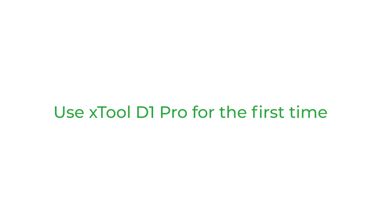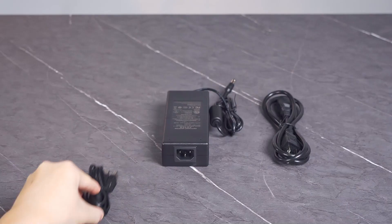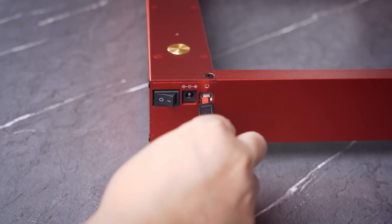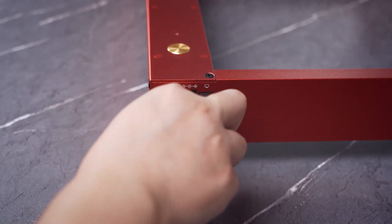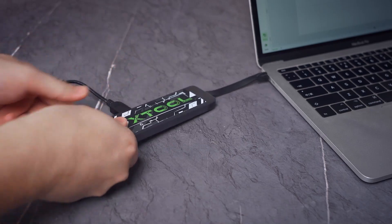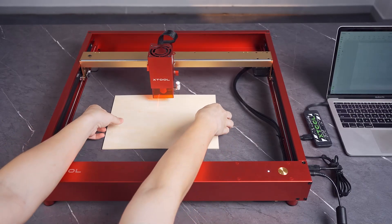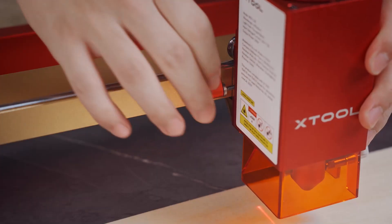Use XTool D1 Pro for the first time. Connect your device to a computer and power supply. Place the material to be processed. Set the position of the laser module.